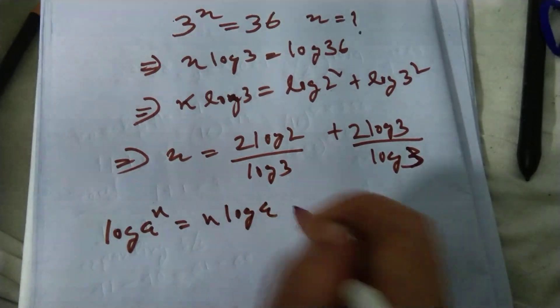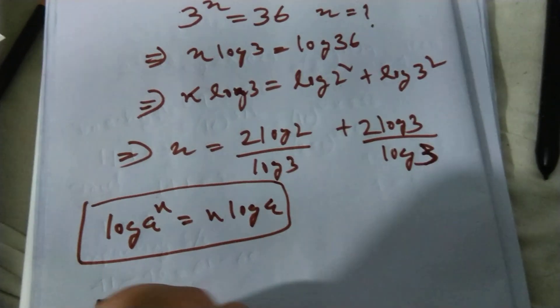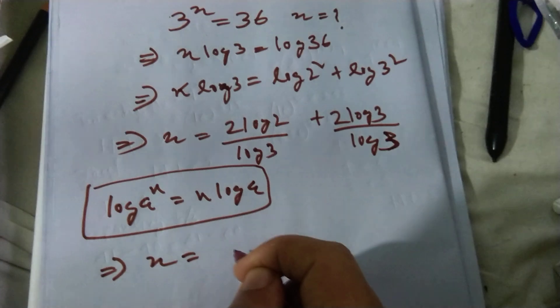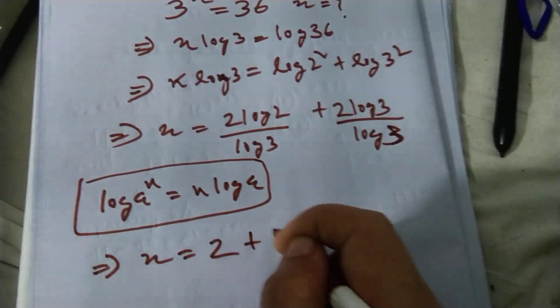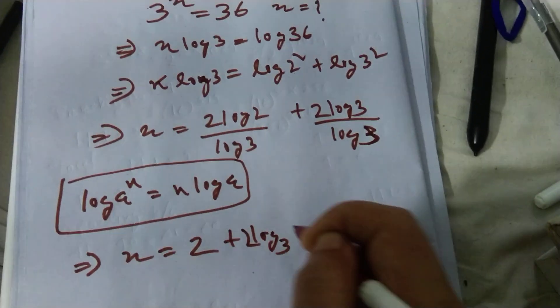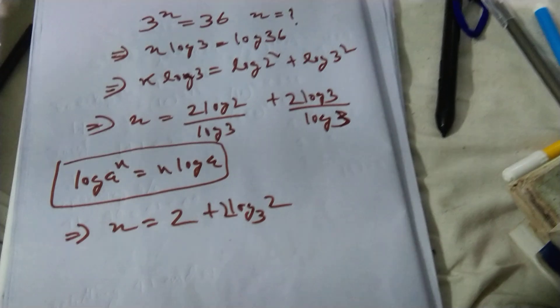So x equals 2 plus log 2 divided by log 3. Thanks for watching friends, I hope it is very easy and very tricky, but it is easy for everyone.